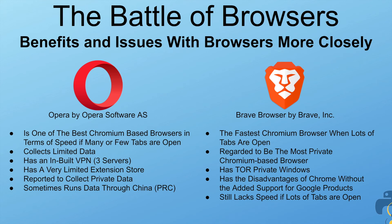Brave browser by Brave Incorporated is the fastest Chromium browser — by a personal experiment — when lots of tabs are open. It is regarded as the most private Chromium-based browser and has private windows with Tor enabled. Its disadvantages include the downsides of Chrome without the added support for Google products, and it still lacks speed relative to Gecko if lots of tabs are open.